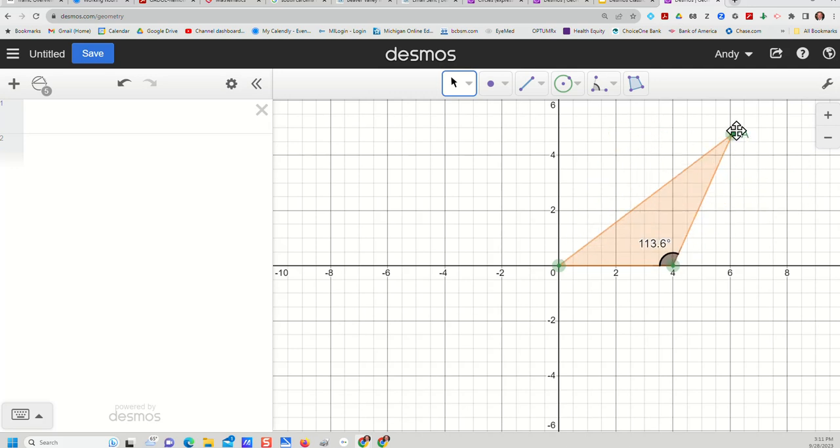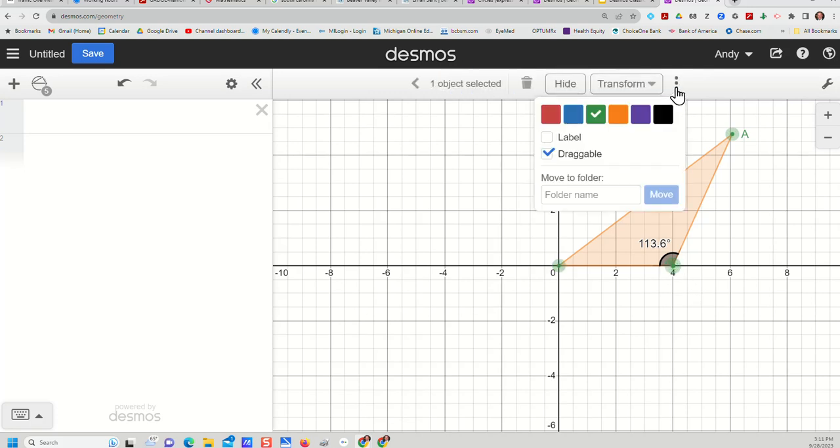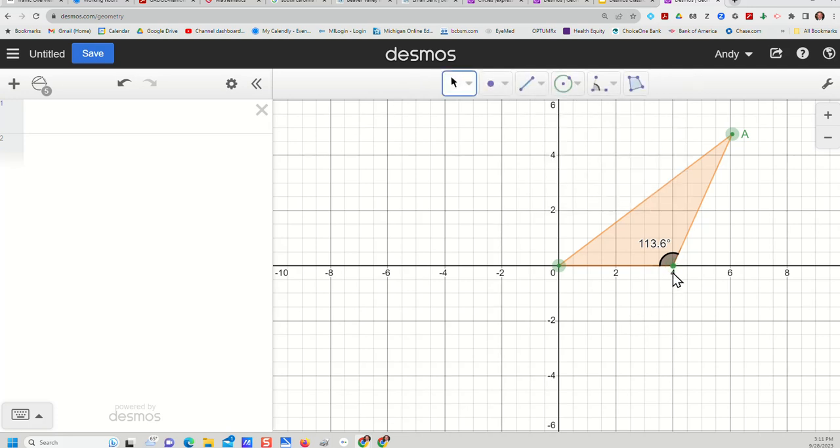And if you want students to manipulate one or two points, but not all three, you can click on any point you want and uncheck the draggable box. And now this point right here is not draggable by students. It's locked in there, but they can manipulate these other points at will. So that's a simple triangle created there.